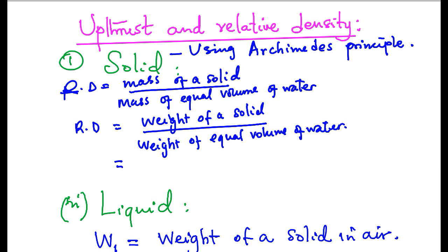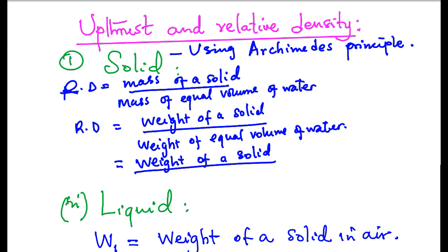By Archimedes principle, the weight of a given volume of water can be equivalent to the weight of water displaced by a solid when immersed in water. This implies therefore that relative density is equal to weight of a solid divided by weight of water displaced by the same solid.